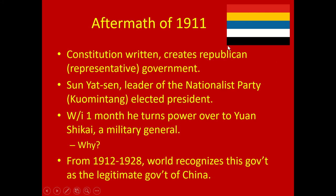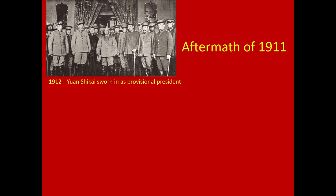The new flag of China under this republic is supposed to represent five races under one flag — five bars, each representing a major ethnicity in China. Despite this, there's going to be a lot of racial backlash, particularly between the Manchu and the Han, even though leaders try to promote the idea that they are really one Chinese people.